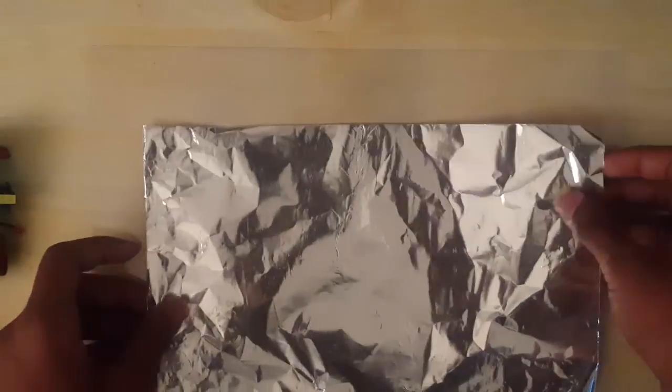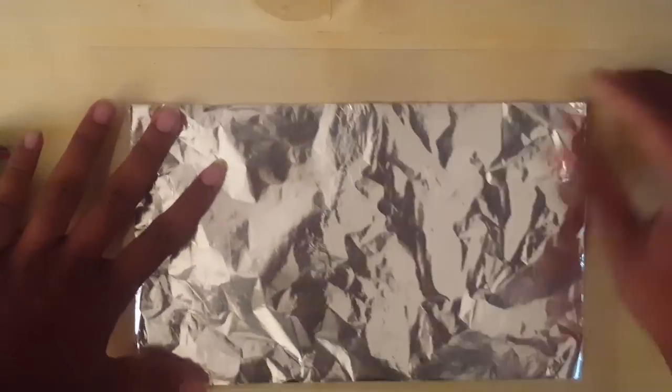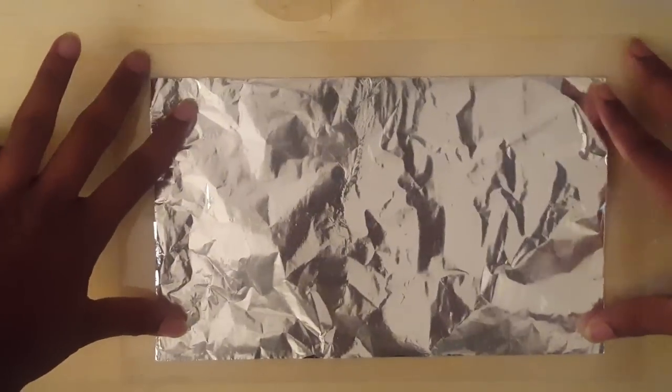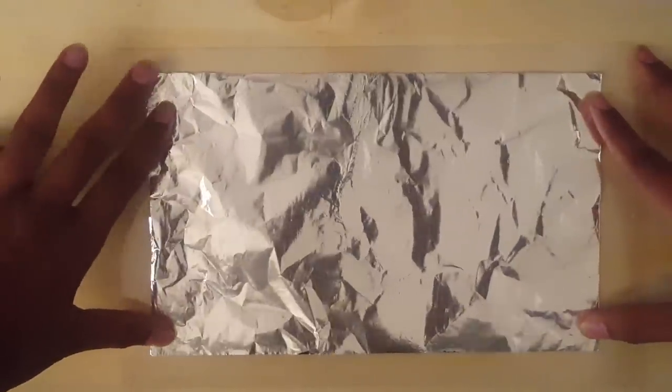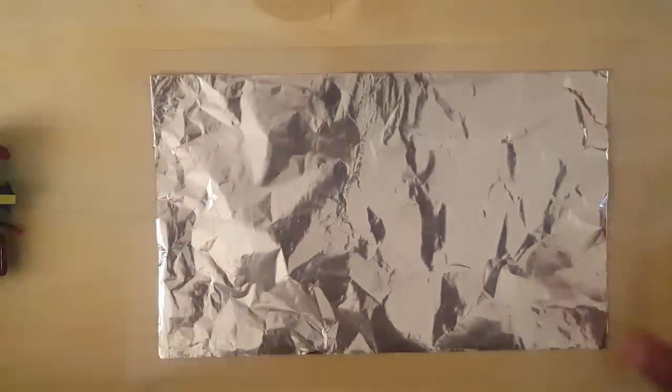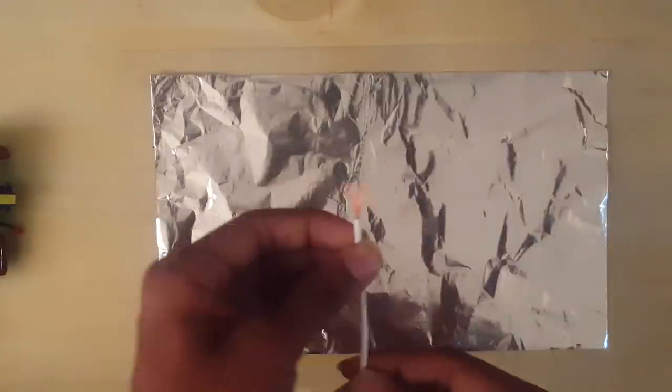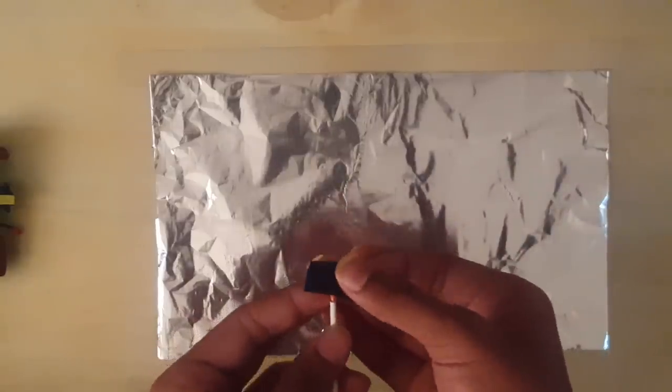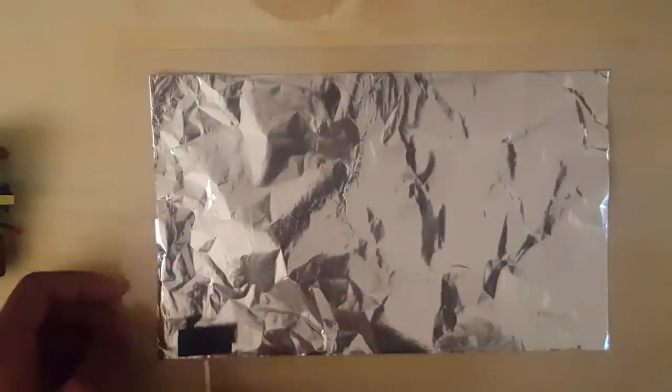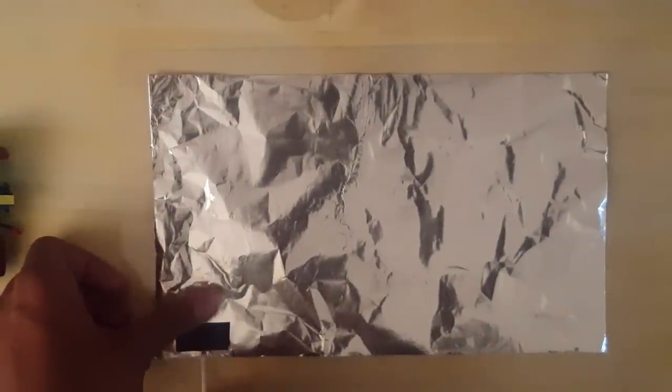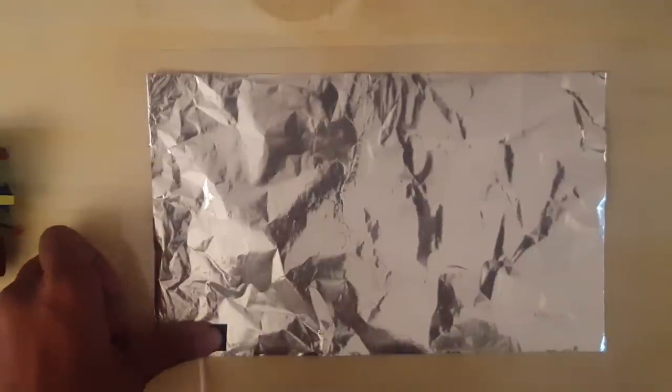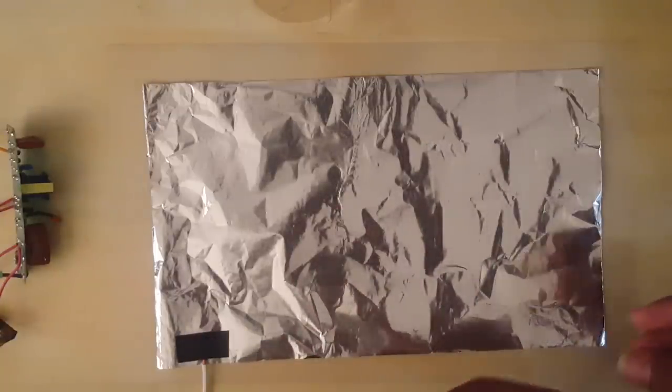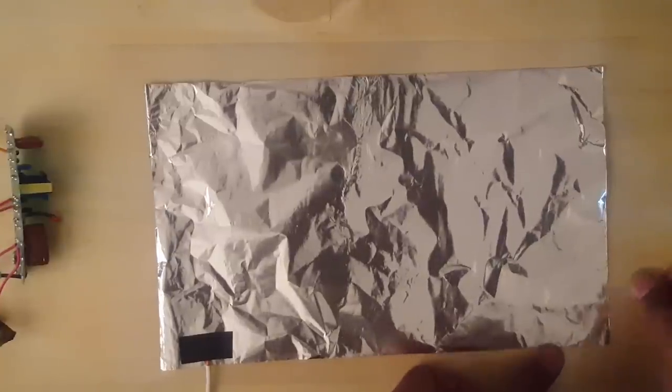Now place one of those plastic sheets down and put an aluminum foil on top of it. Then take a high-voltage wire and tape it with electric tape.